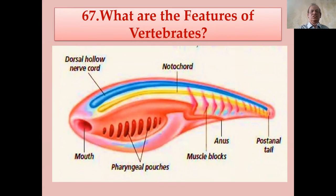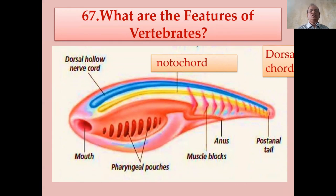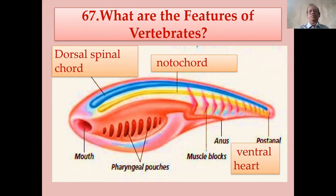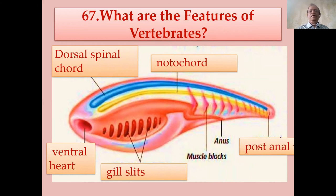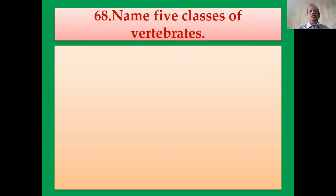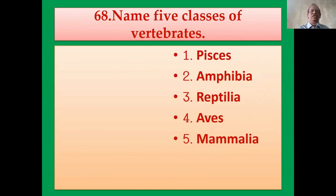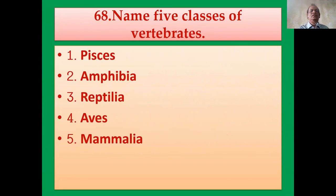Now we think about vertebrates. The basic special features of all vertebrates are: dorsal notochord, dorsal spinal cord, ventral heart, gill slits, and post-anal tail. The five classes of vertebrates are: Pisces, Amphibia, Reptilia, Aves, and Mammalia.